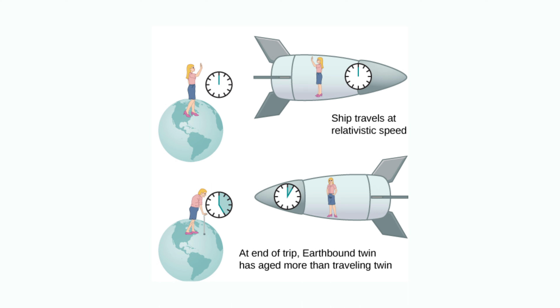Einstein's special theory of relativity, published in 1905, challenged the traditional view of space and time as separate and absolute entities. Einstein proposed that space and time are part of a single entity called space-time, and that the laws of physics are the same for all observers regardless of their motion relative to each other.